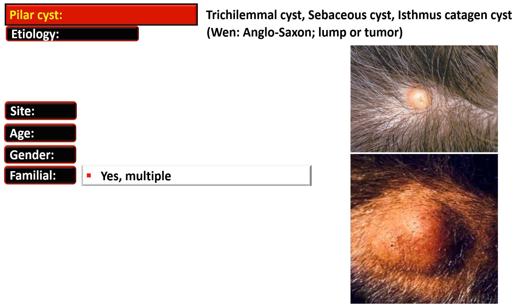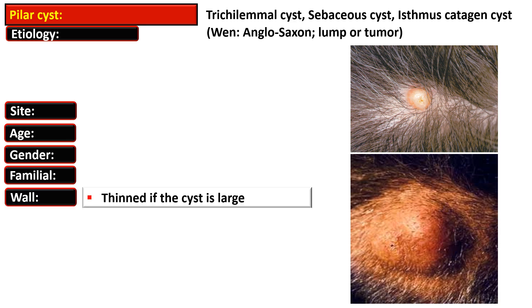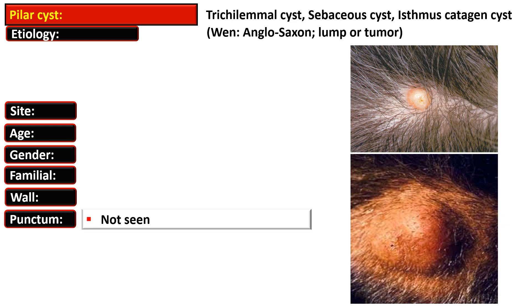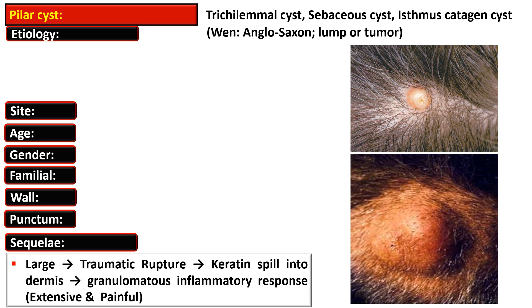These pilar cysts have a familial tendency and are usually multiple. If the cyst is large, the wall is thinned out and punctum on the surface is not seen.